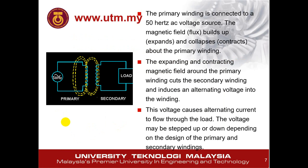The operation of a transformer is also important and will usually be asked in the theory part of exam questions. How does a transformer work? In Malaysia, we use a 50 Hz AC voltage source. This AC voltage goes into the primary winding and induces a magnetic flux inside the core. The magnetic flux expands and contracts in the primary winding. The expanding and contracting magnetic field around the primary winding cuts the secondary winding and induces an alternating voltage into that winding. As a result, the voltage causes alternating current to flow through the load.